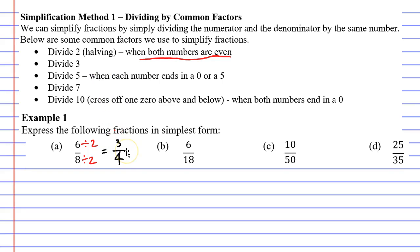Now 3 over 4, or 3 quarters, is a fraction that is in simplest form. We cannot simplify it any further.